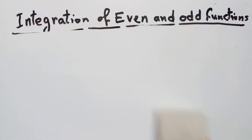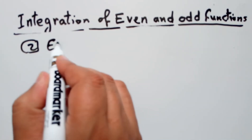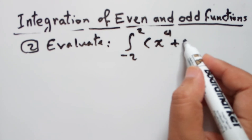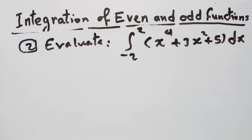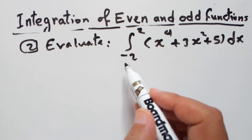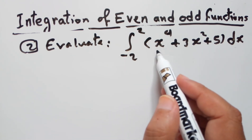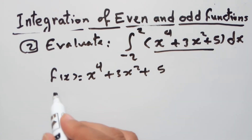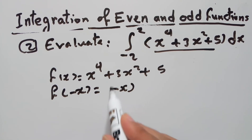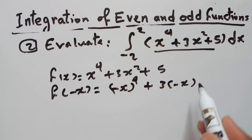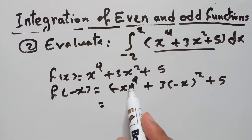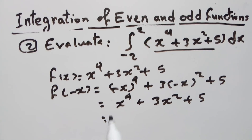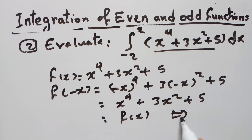Another example: evaluate the integral from -2 to 2 of (x⁴ + 3x² + 5) dx. This is a closed interval from -2 to 2, a number and its opposite, so check whether f(x) = x⁴ + 3x² + 5 is even or odd. Compute f(-x) = (-x)⁴ + 3(-x)² + 5. Any negative number raised to an even power is positive, so f(-x) = x⁴ + 3x² + 5 = f(x). Therefore f(x) is an even function.